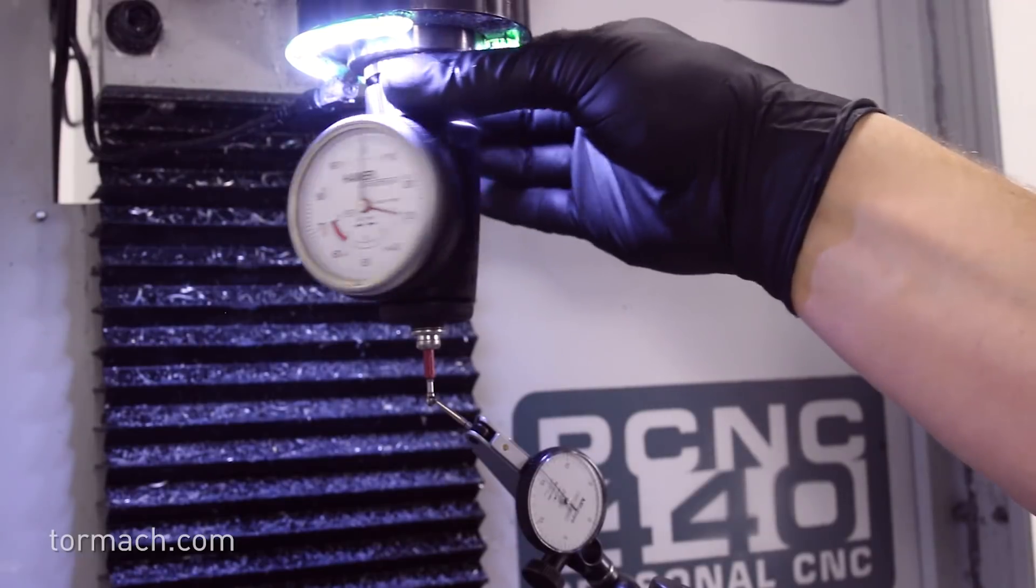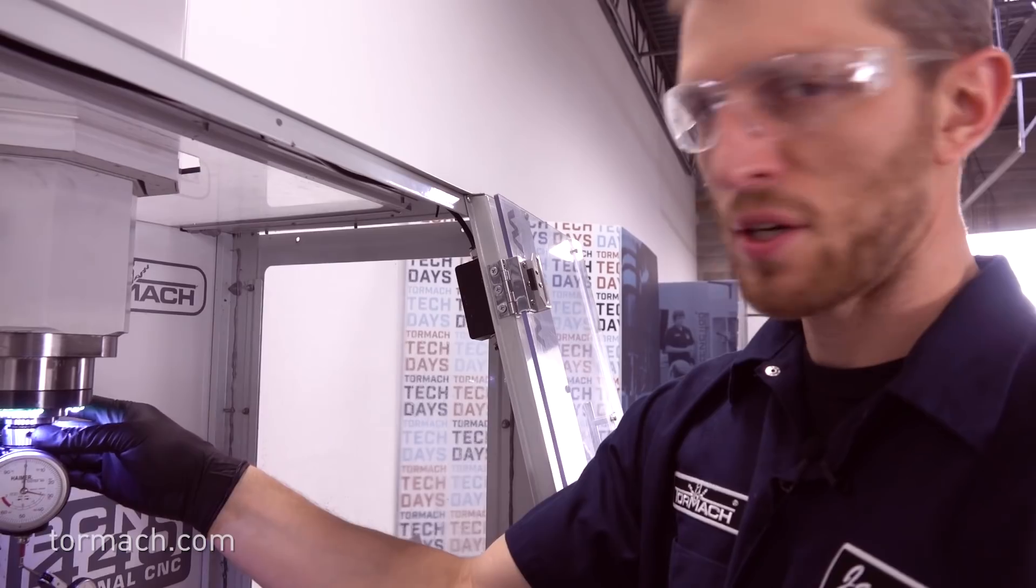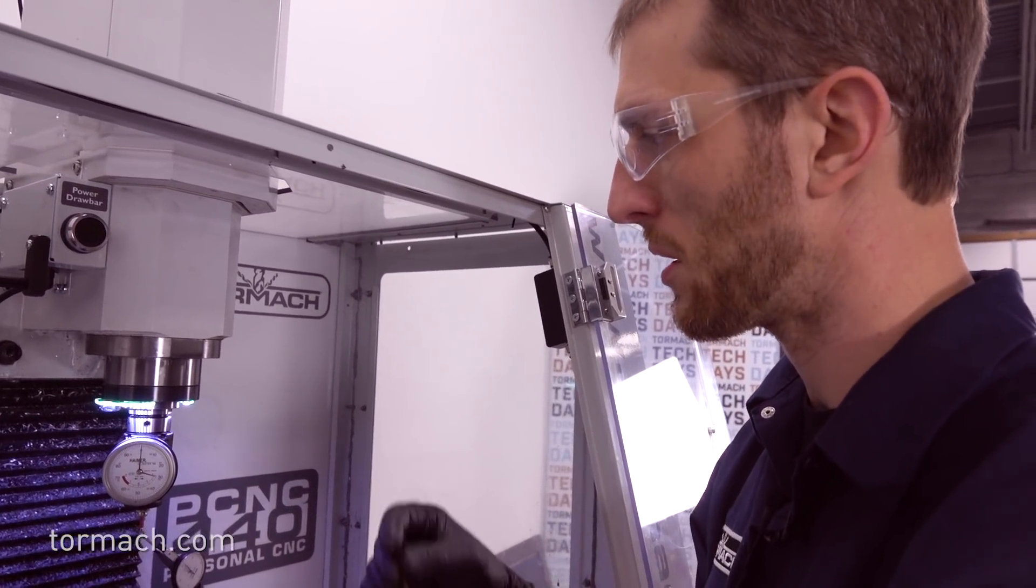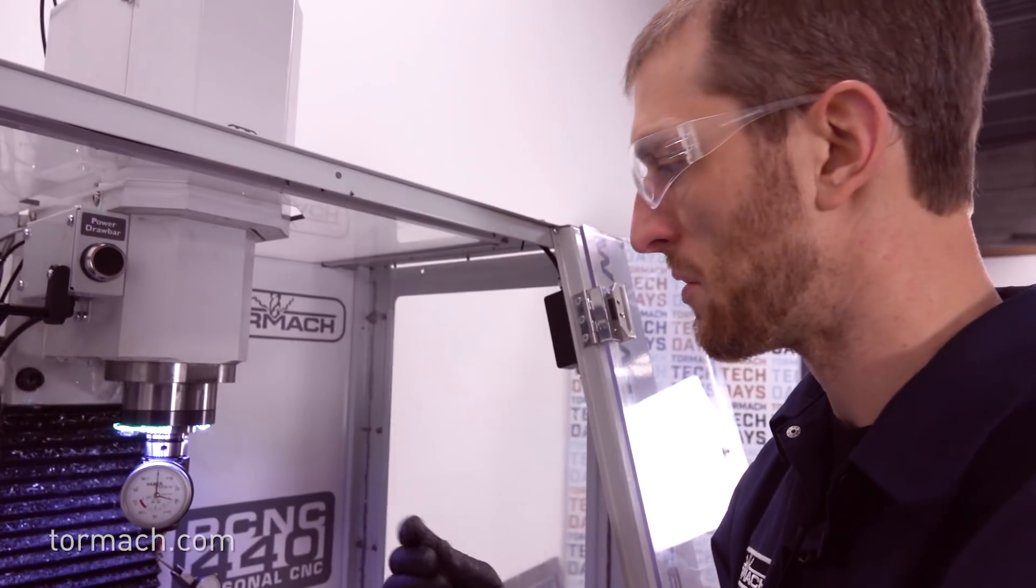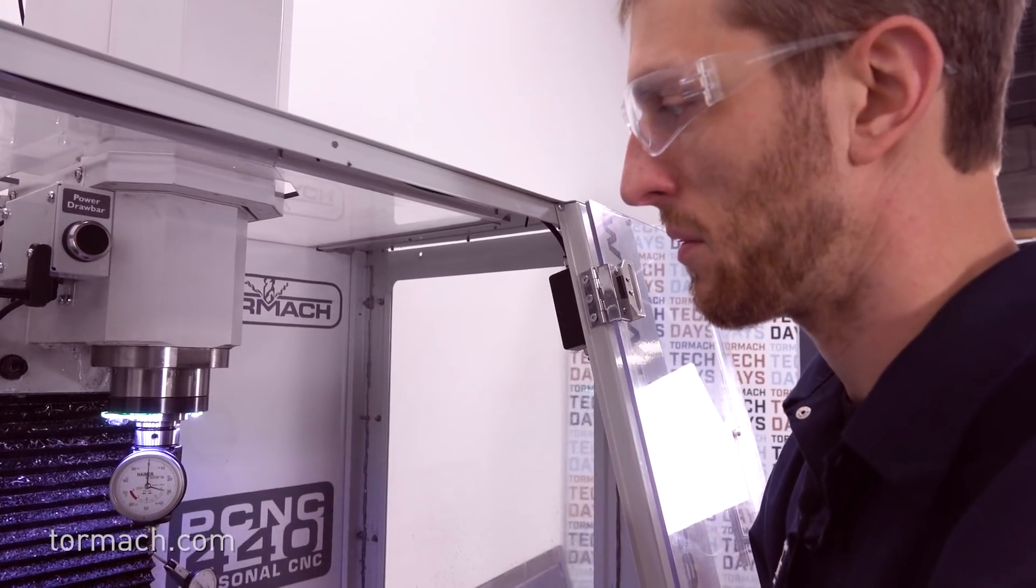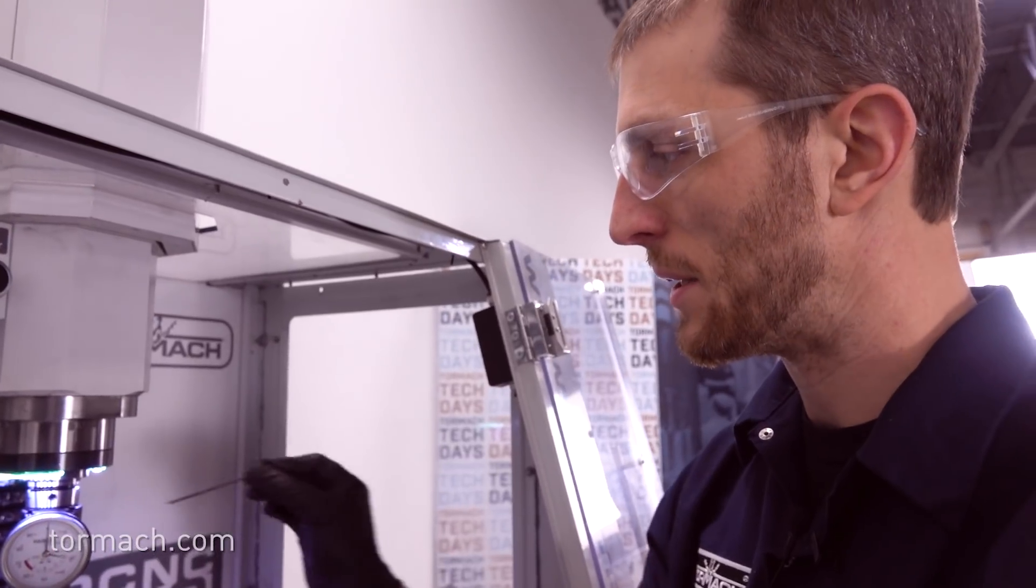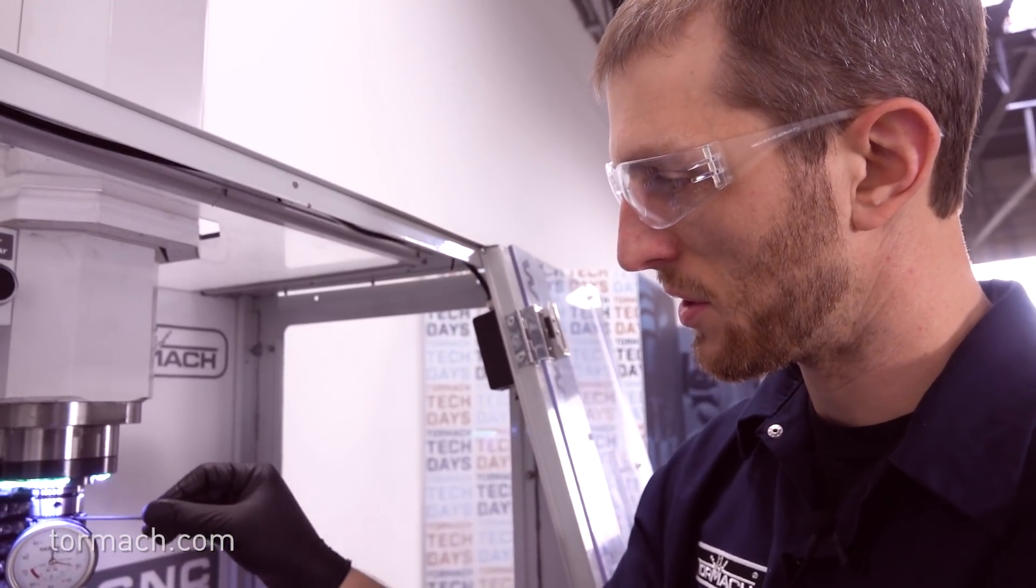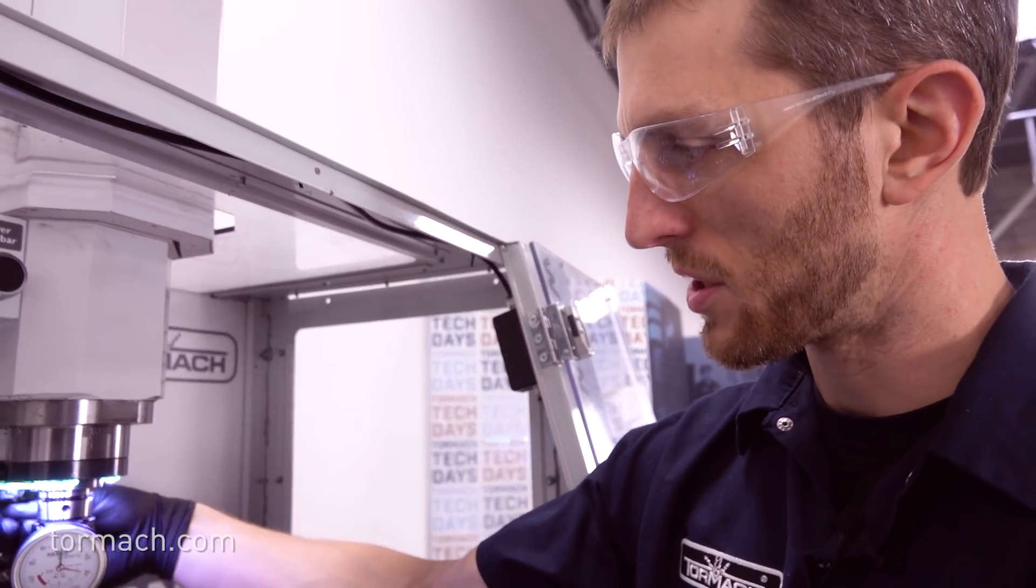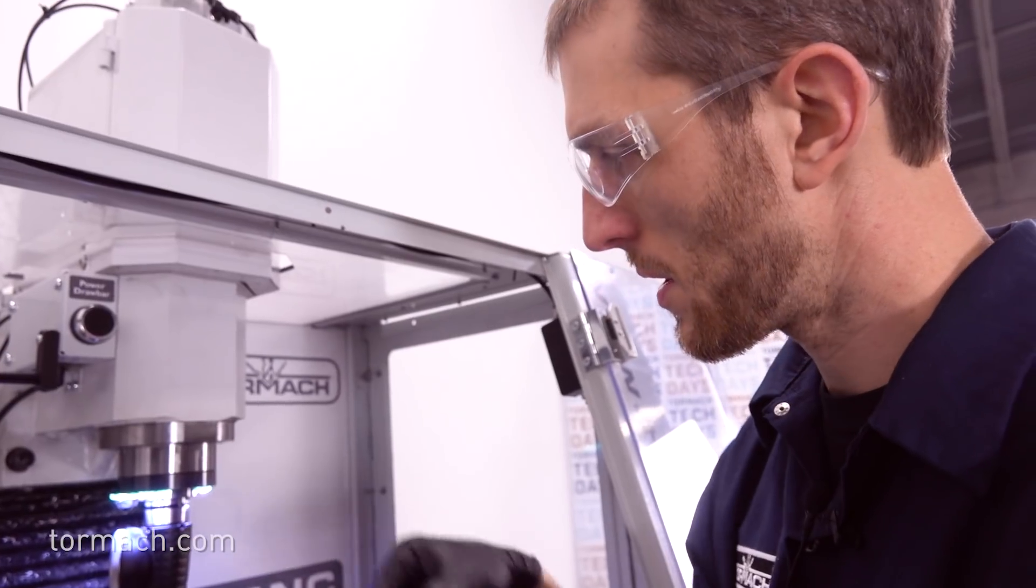There we got it right down to about five tenths run out and the magic question everybody always wants to know is how good is good enough. That's a very individual question. If you're making components with a 30 thousandth tolerance, a couple thou run out might be plenty good. But if you're really trying to hold some really tight tolerances, obviously the tighter this is set up and calibrated, the more accurate your setups can be.